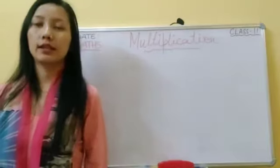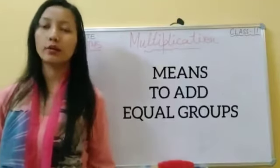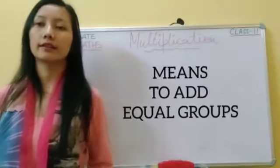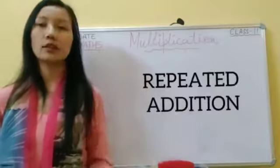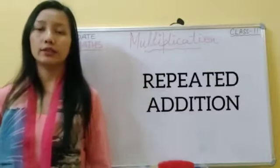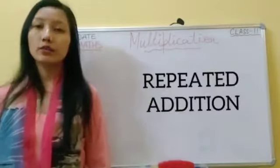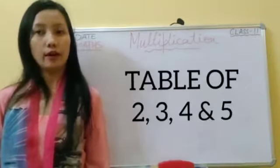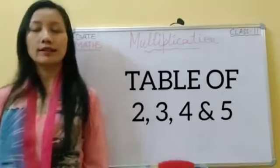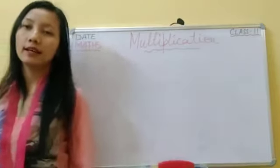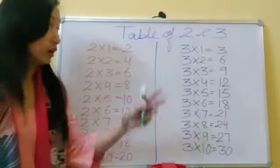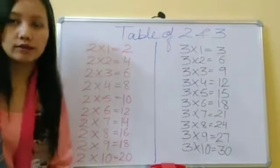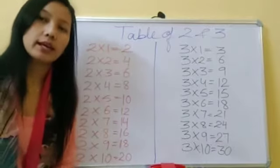Multiplication. Multiply means to add equal groups. When we multiply, the number of things in the group increases. Multiplication is also a repeated addition. You have already learnt the tables of two, three, four and five. So let's recall those tables. Let's recall the table of two and three.